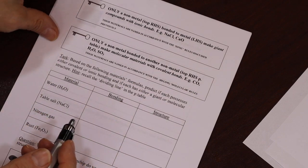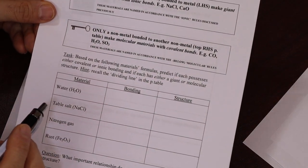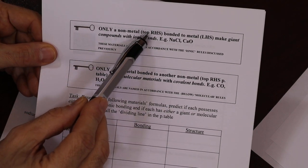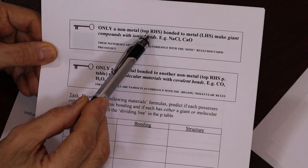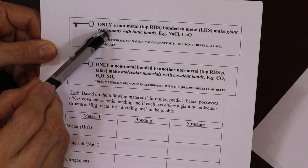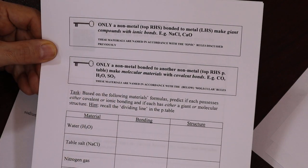Okay, so here's our summary. Only a non-metal, top right, with a metal, essentially bottom left, make giant ionic compounds. Turns out that ionic compounds are always giant because of the non-directional nature of the bonding.